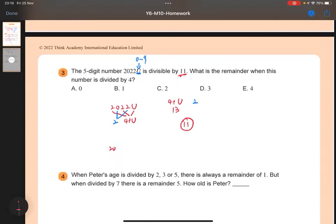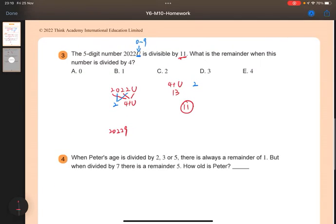So the number should be 2, 0, 2, 2, 9. And then the question is, what is the remainder when this number is divided by 4?